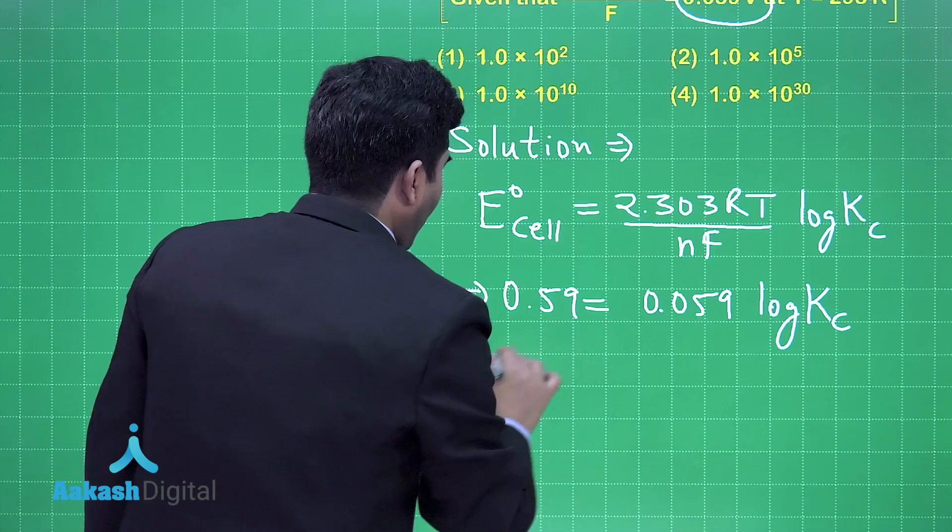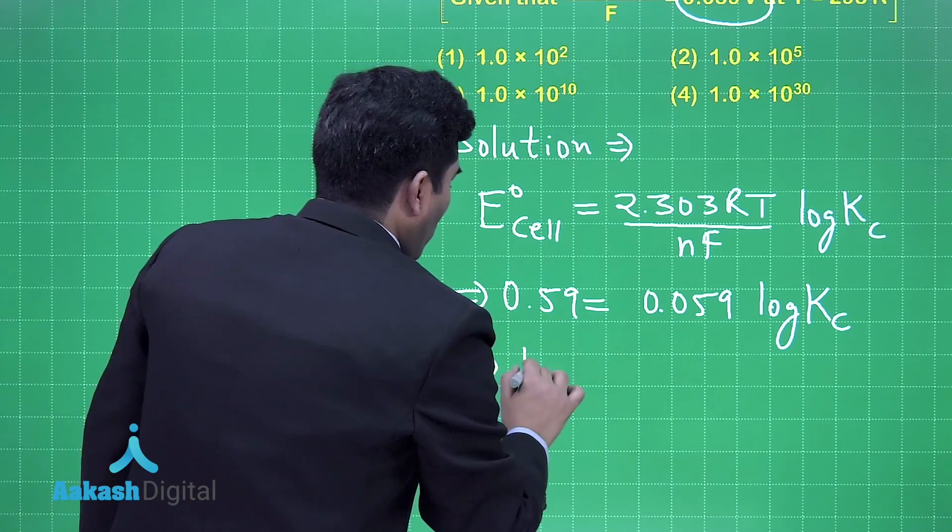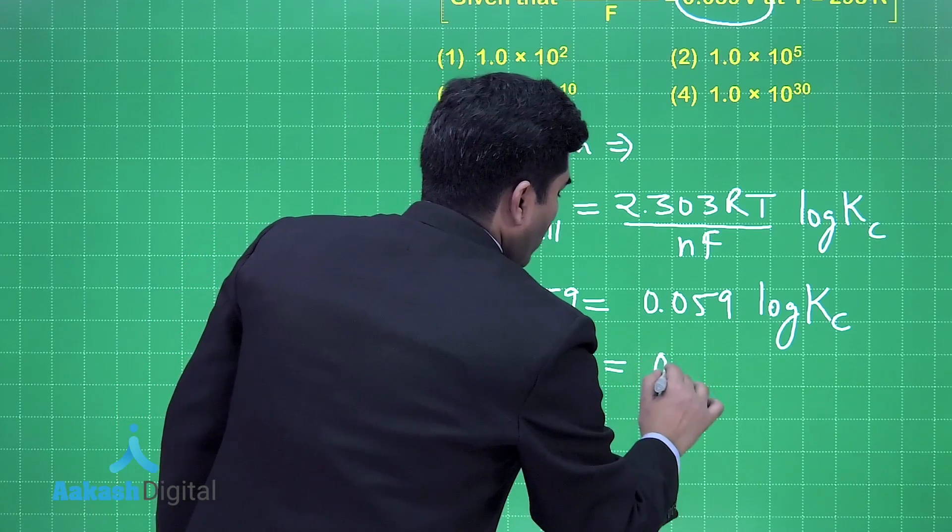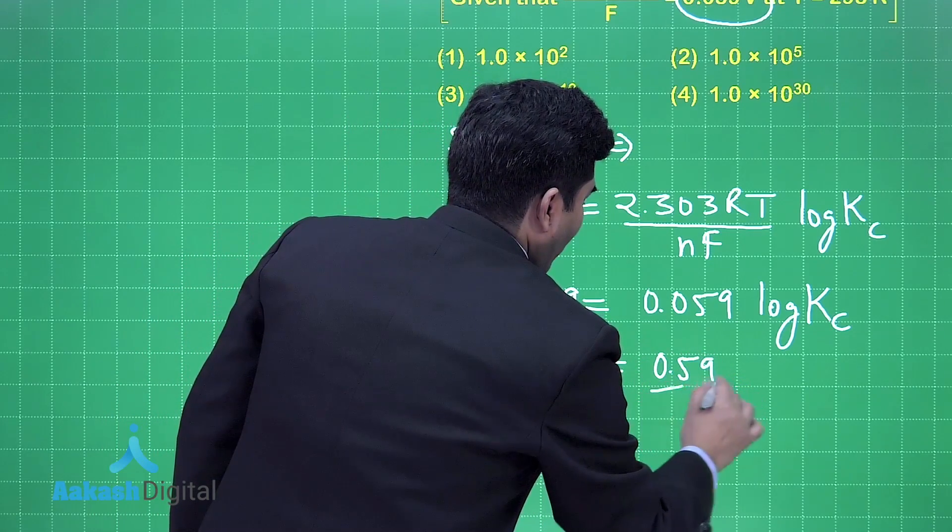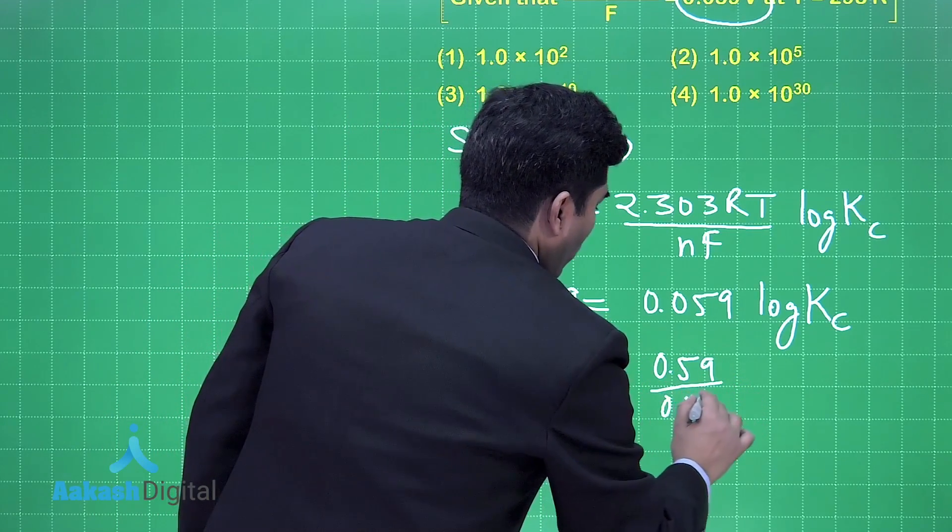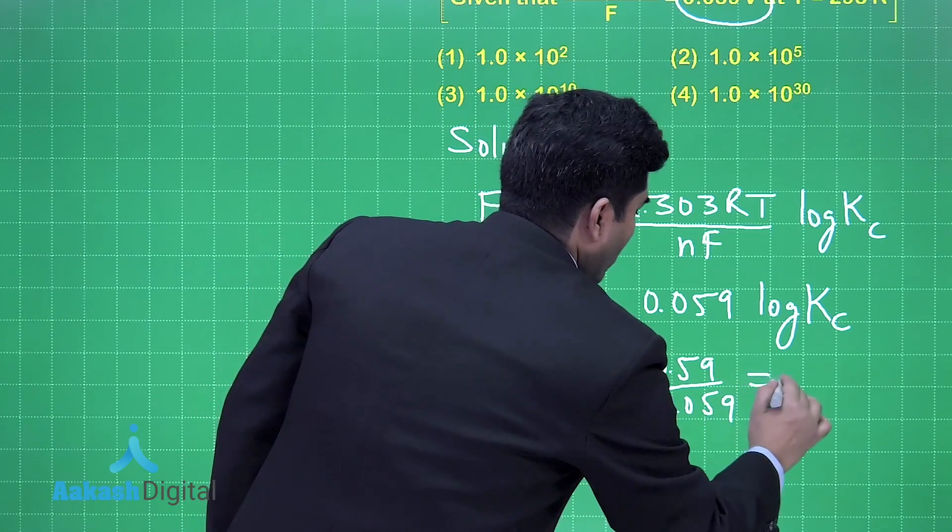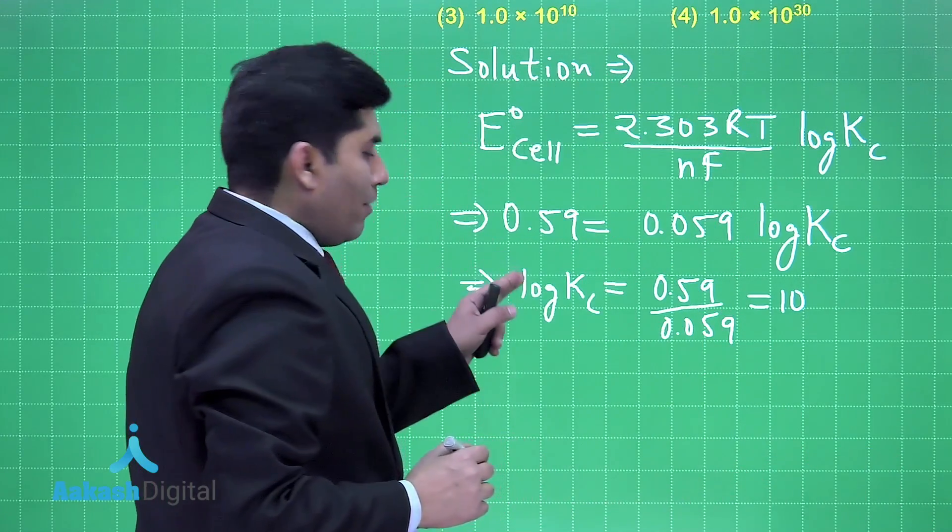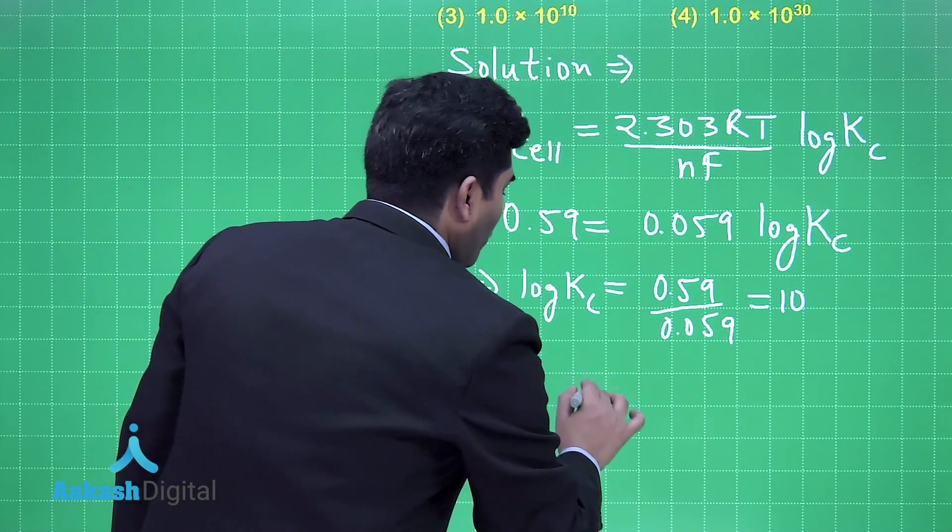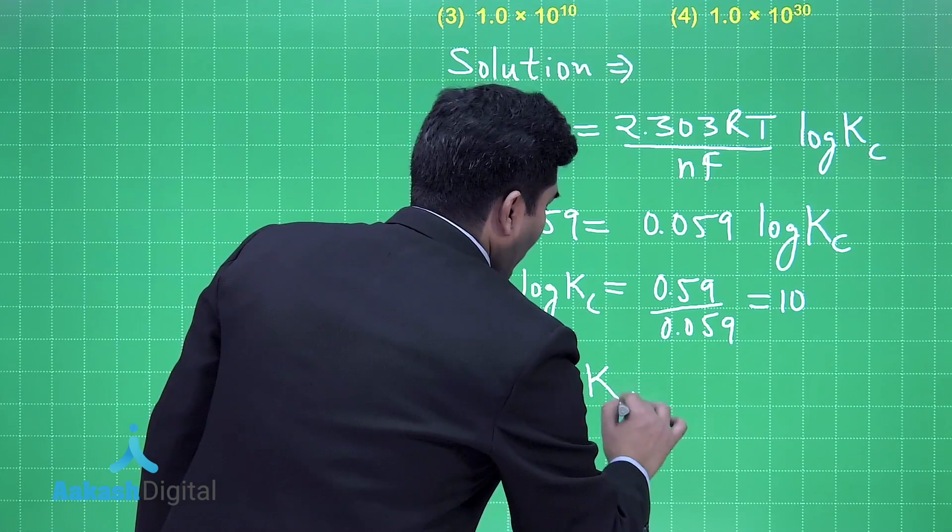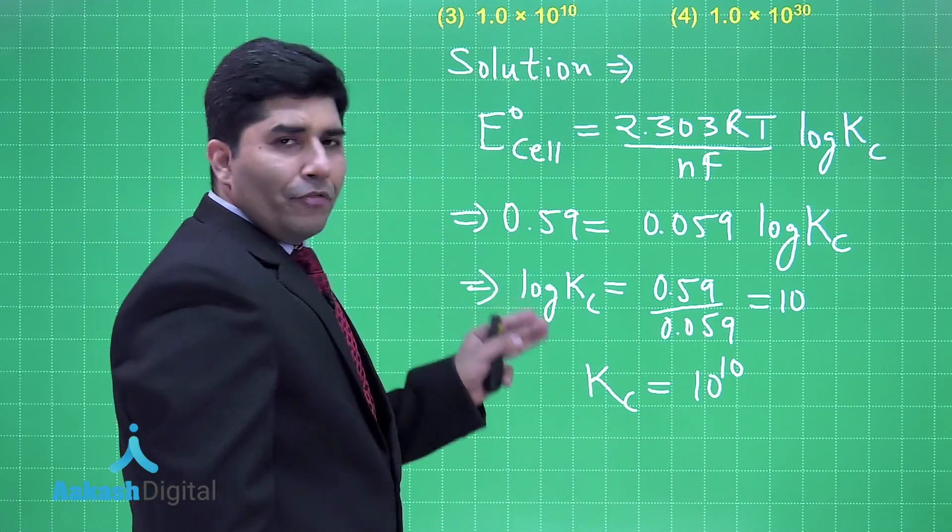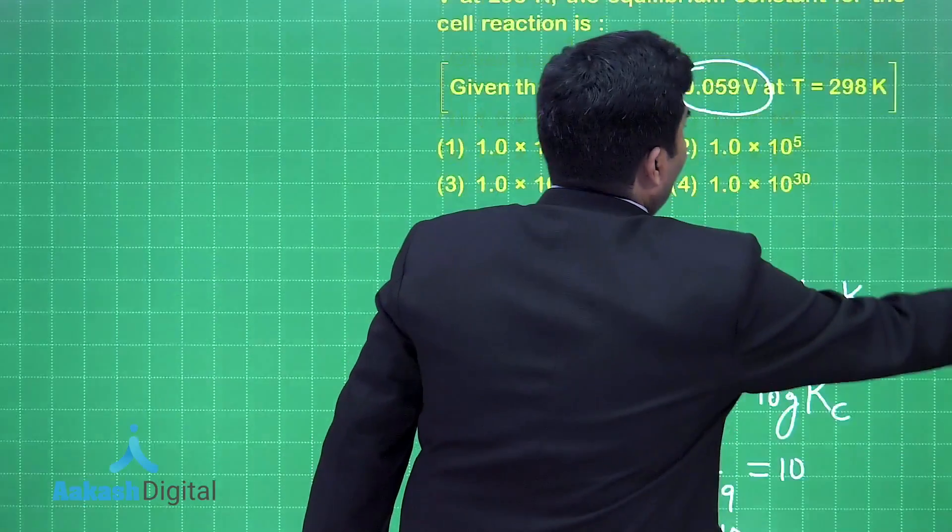0.59 and log Kc = 0.59 divided by 0.059, that is equal to 10. And when we find the value of Kc, we have to take antilog of 10, and antilog of 10 is equal to 10^10.